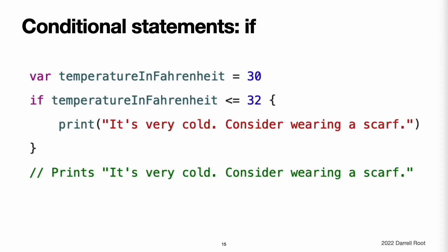Conditional Statements. It is often useful to execute different pieces of code based on certain conditions — you might want to run an extra piece of code when an error occurs, or display a message when a value becomes too high or too low. Swift provides two ways to add conditional branches: the if statement and the switch statement. Typically, you use the if statement to evaluate simple conditions with only a few possible outcomes. The switch statement is better suited to more complex conditions with multiple possible permutations, and is useful where pattern matching can help select an appropriate code branch.